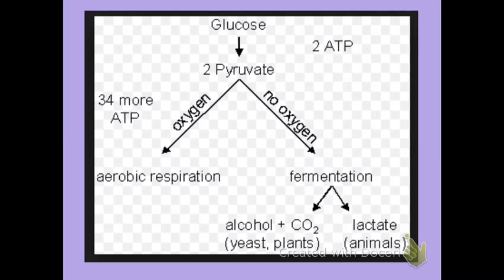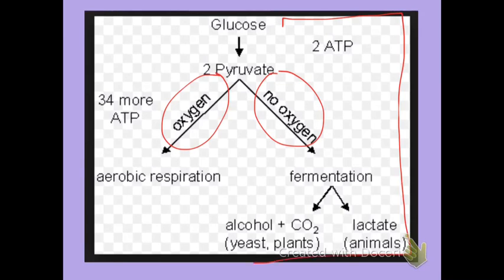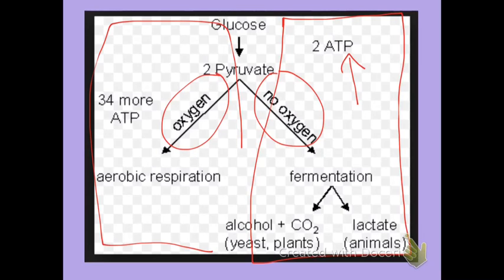This slide shows what happens to glucose during cellular respiration without oxygen versus with oxygen. Without oxygen, that's anaerobic respiration, and it ends with fermentation, producing only two ATP. When glucose is in a cell that has mitochondria and the presence of oxygen, it produces a lot more ATP through aerobic respiration — a total of 36 ATP, which is 34 plus 2.